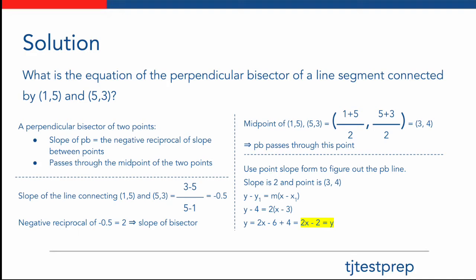The first step in solving this problem is finding the slope of the line connecting (1, 5) and (5, 3), which we can find using the slope formula of change in y over change in x. That gives us (3 minus 5) over (5 minus 1), which equals negative one-half. We then take the negative reciprocal of negative one-half, which is 2 — the slope of our perpendicular bisector.